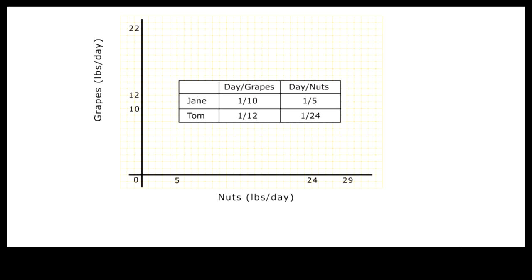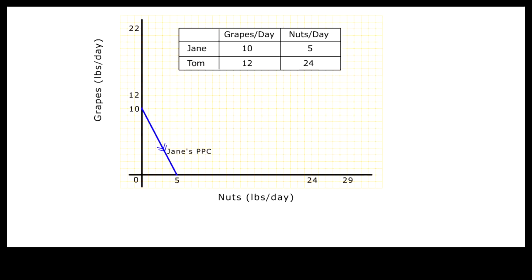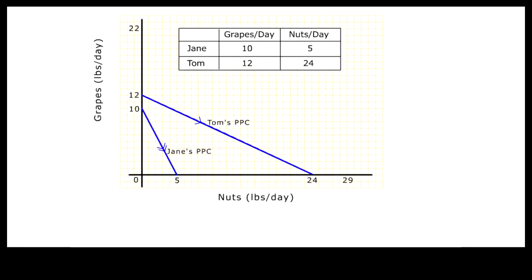But let's convert these time per unit output numbers into output per unit time numbers by taking the reciprocal of each table cell. Now we can plot these numbers into production functions for Tom and Jane. Jane can produce a maximum of 10 pounds of grapes or 5 pounds of nuts per day. Her linear production function is a straight line connecting the vertical and horizontal intercepts, showing the various combinations of grapes and nuts Jane can produce in a day. This is commonly known as the Production Possibilities Curve or Production Possibility Frontier. We can plot Tom's production function similarly.